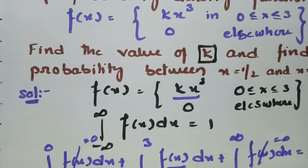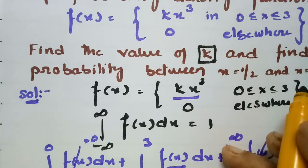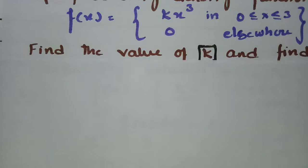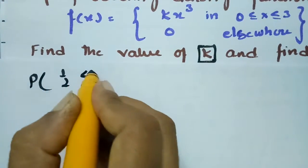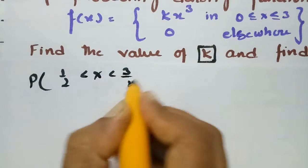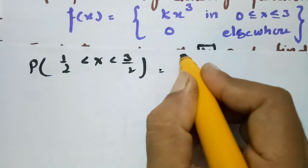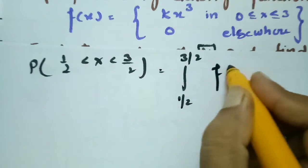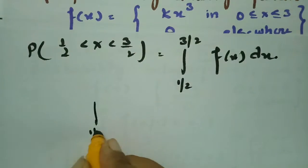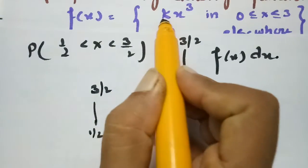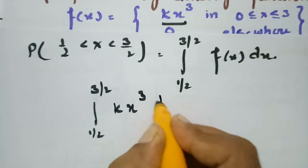Next, we find the probability that x lies between 1/2 and 3/2. This is P(1/2 < x < 3/2), which equals the integral from 1/2 to 3/2 of f(x) dx. Since f(x) = k·x³ in this range, the integral becomes the integral from 1/2 to 3/2 of k·x³ dx.